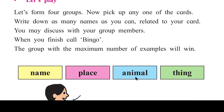Animal means the name of any animal — koi janwar ka naam — like dog, cow, chameleon, caterpillar, butterfly, squirrel. Things — cheezein — like laptop, mouse, mic, toys, toothbrush, toothpaste, comb. So we have to write as many names as possible under each category.